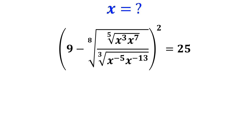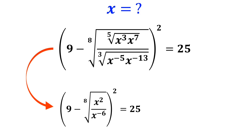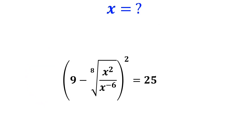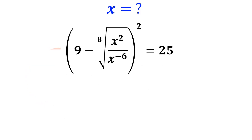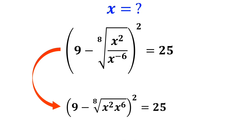Now, instead of the original equation we can write 9 minus the 8th root of x squared over x to the power of negative 6, all squared, is equal to 25. We rewrite this expression as 9 minus the 8th root of x squared times x to the power of 6, all raised to the power of 2, is equal to 25.